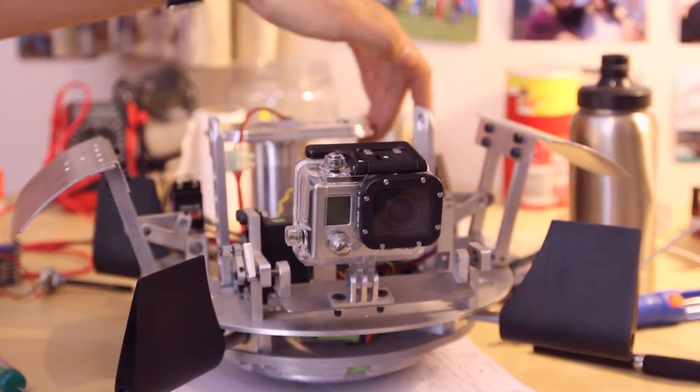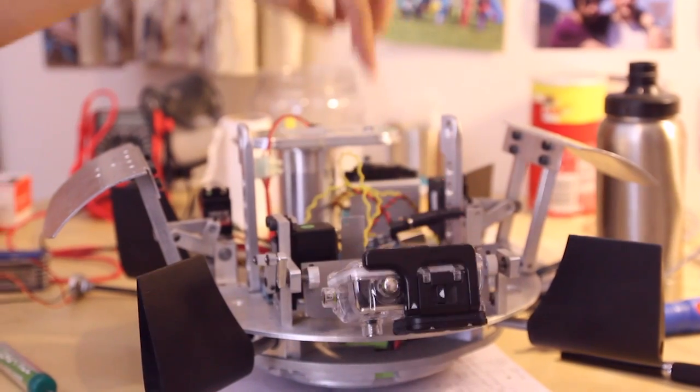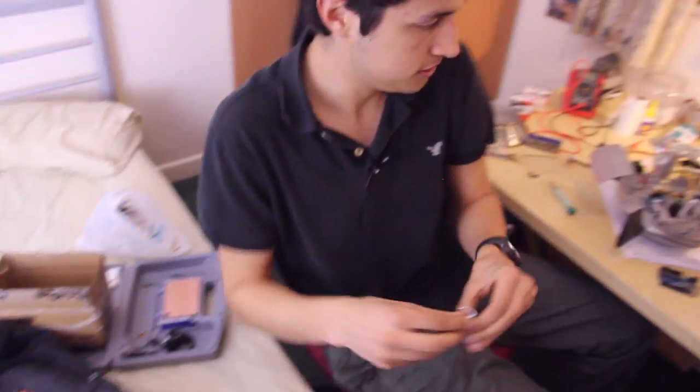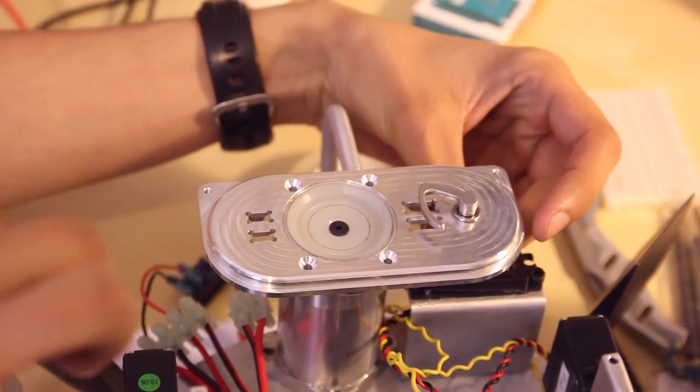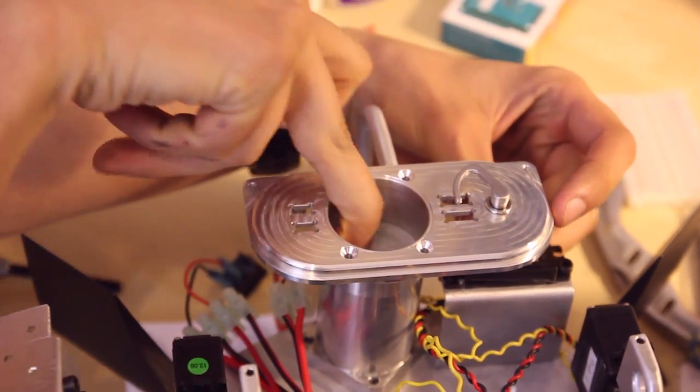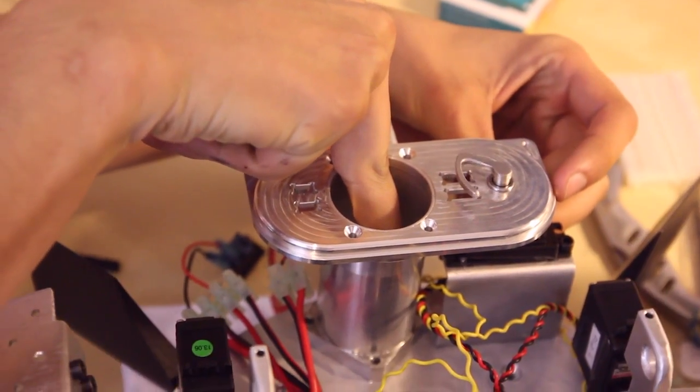The deployment wand isn't finished yet, we need to put the coupler in. Basically what it's going to do is turn the closing pin and deploy the parachute. So the pilot chute sits in here. We can go through what that is if you want.